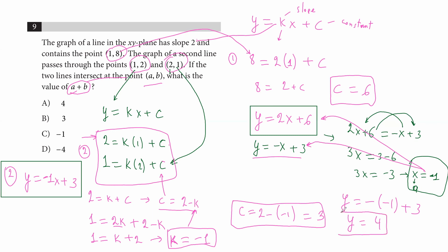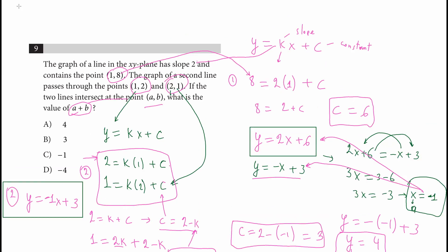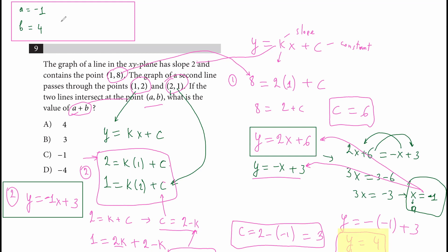So the coordinates are a = −1 and b = 4. Finding the total: a + b = −1 + 4 = 3. That's our answer, which you can find in choice B.